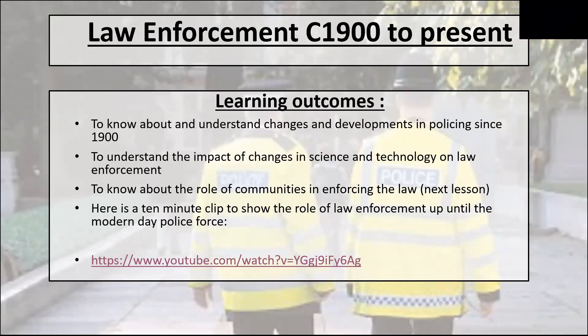Welcome Year 10s to this next session on crime and punishment. In our series we're looking at crime and punishment from the 1900s onwards. Today we're going to be looking at law enforcement from 1900 onwards up until the present. Our learning objectives are: to know and understand about changes and developments in policing from 1900 onwards, and to understand the impact of those changes, particularly the impact that science and technology have made.